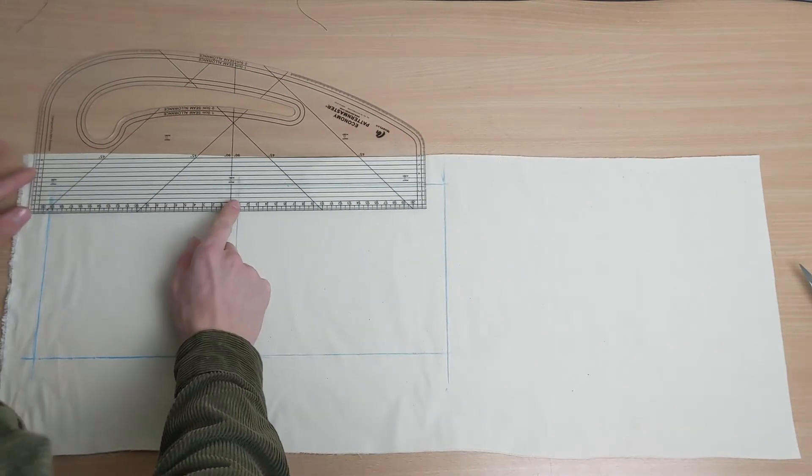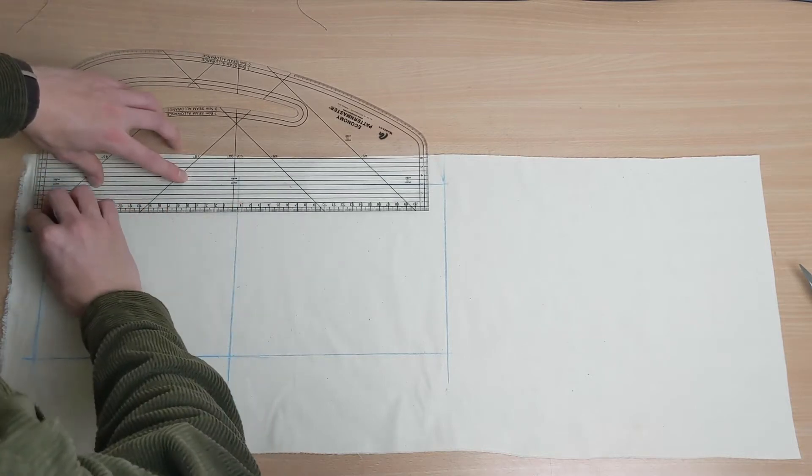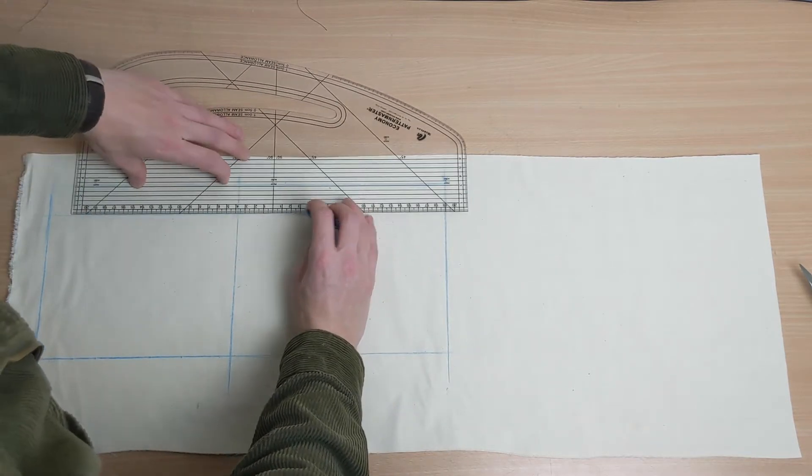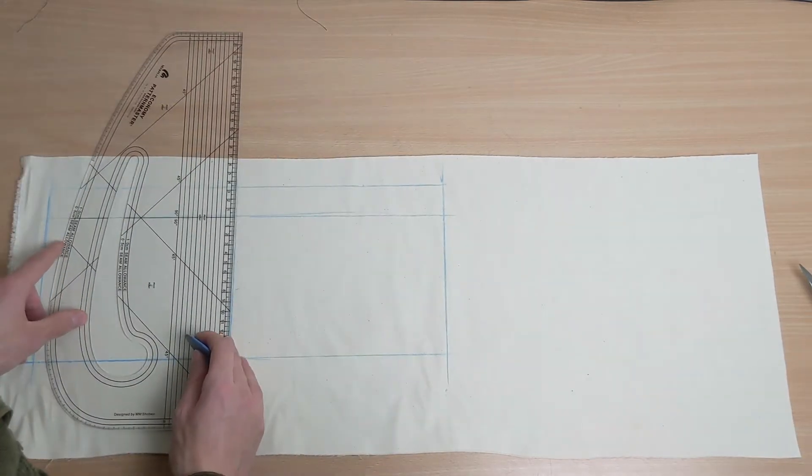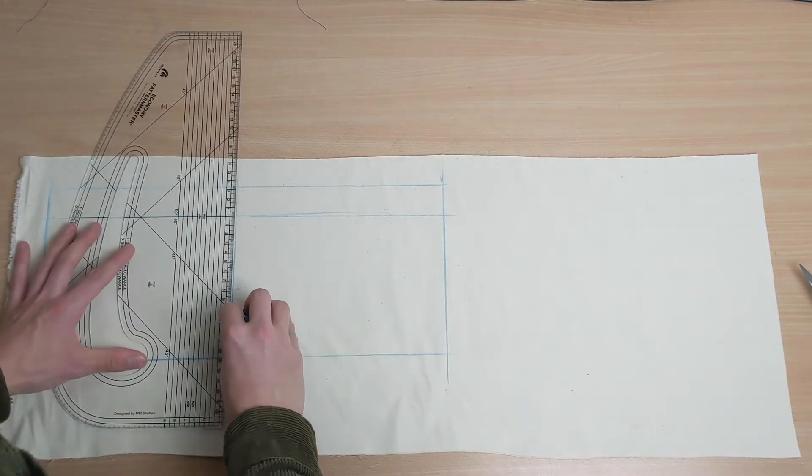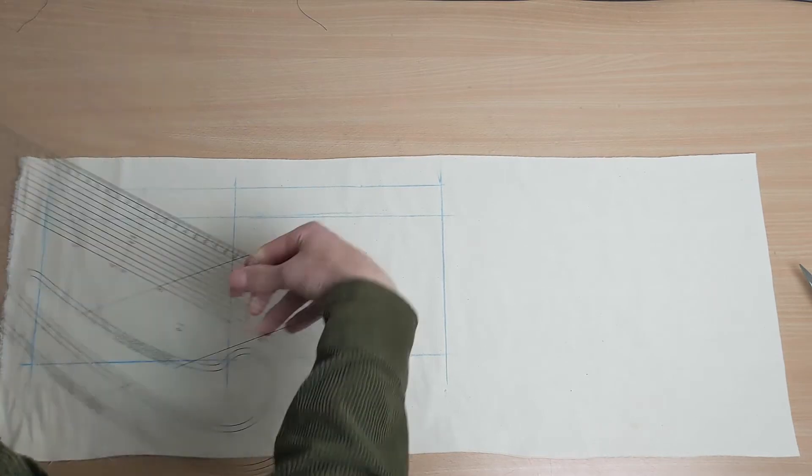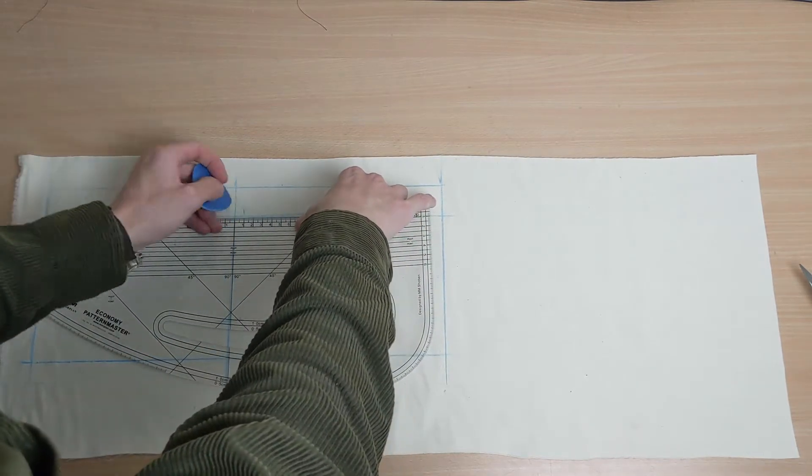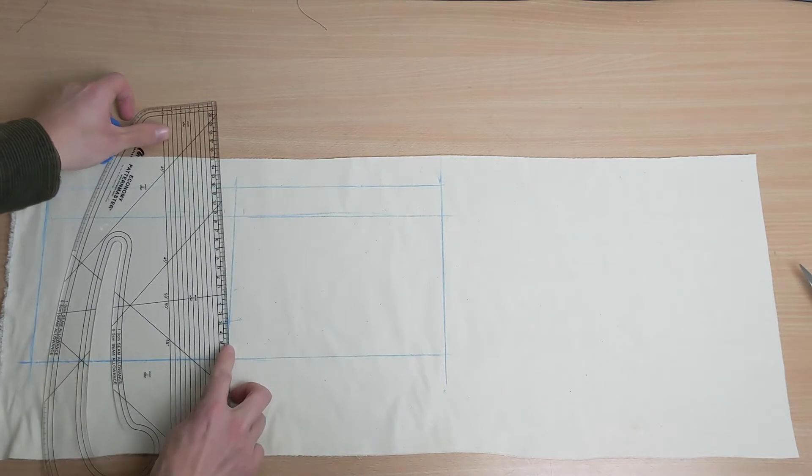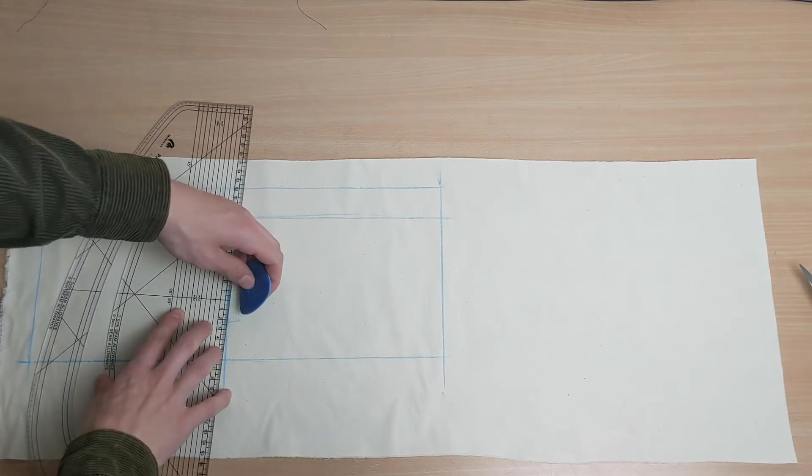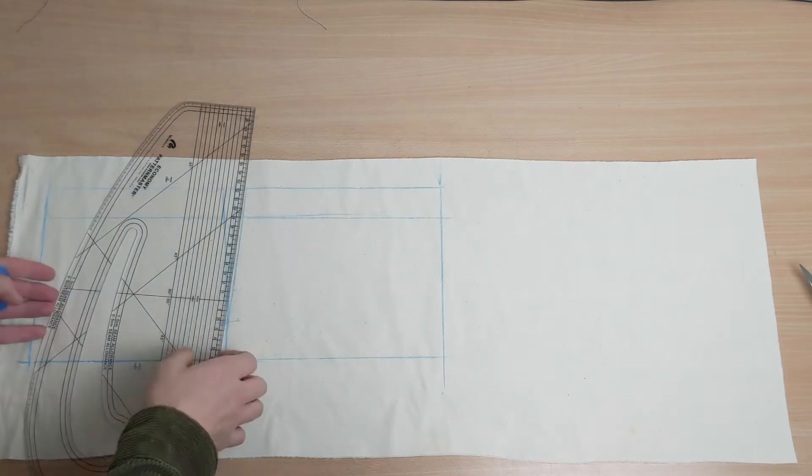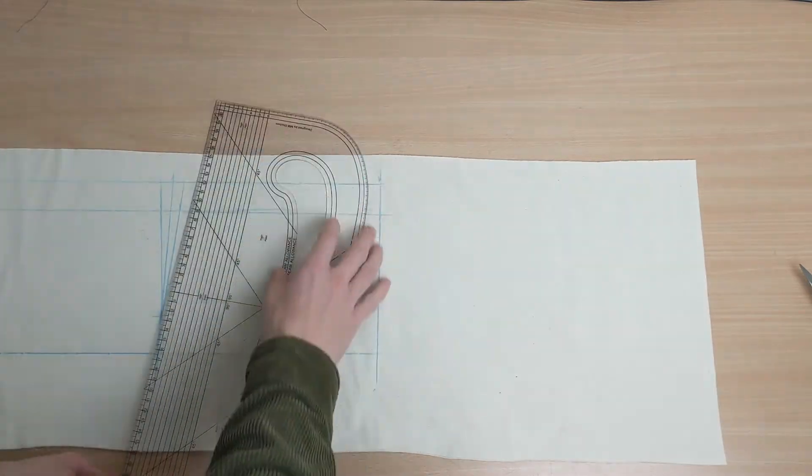Measure down from the top of your rectangles three centimeters and draw a line all the way across. This will be your waistband inlay and technically the top of your pattern. At the point that they meet, measure down 11 centimeters from the waistband inlay and measure in one centimeter on both patterns. Connect these points with diagonal lines.